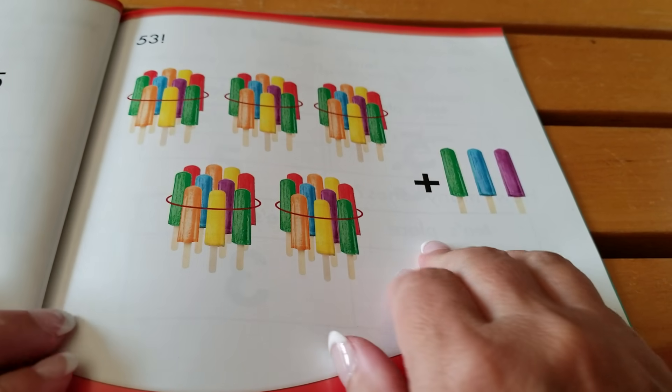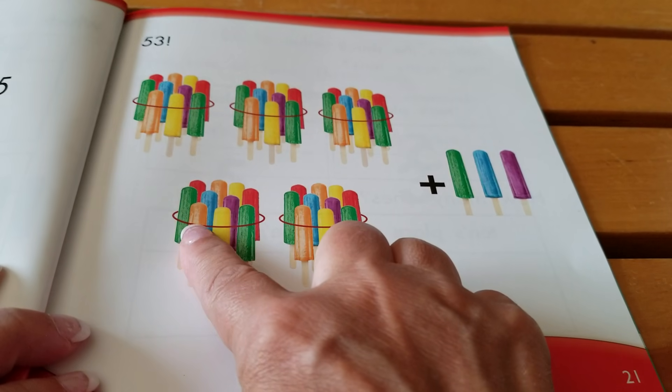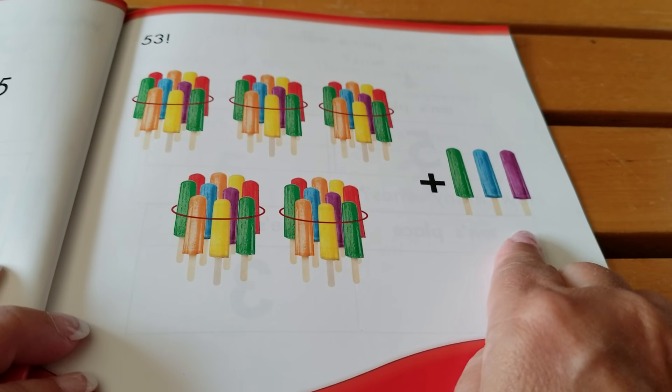Fifty-three has ten, twenty, thirty, forty, fifty, one, two, three. Fifty-three.